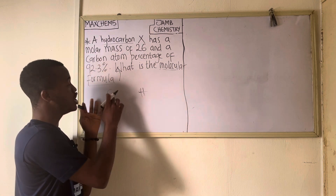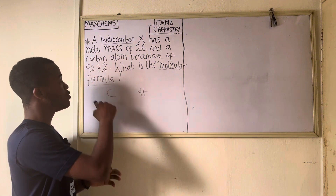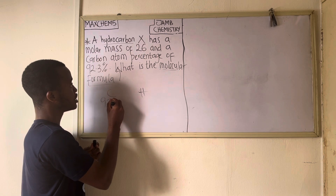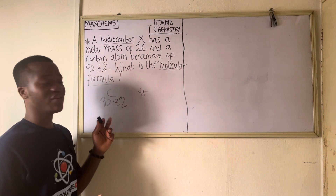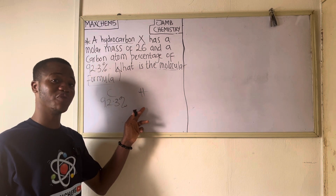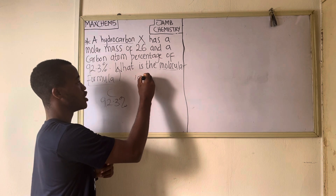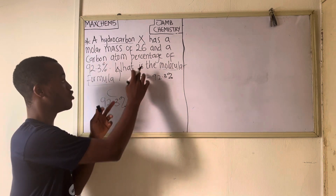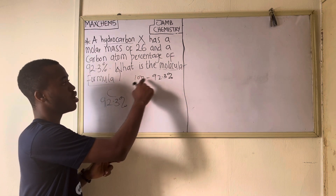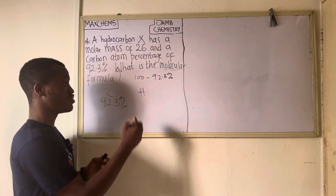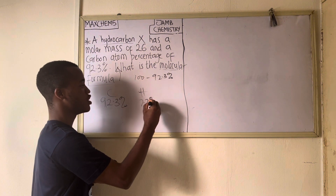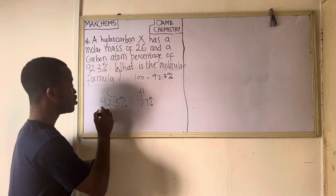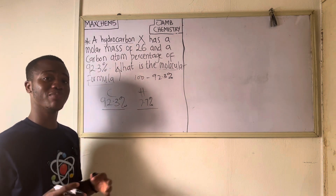To get the empirical formula, we need to write the percentage composition of each of the elements in the compound. We are given the percentage composition of carbon to be 92.3 percent. Now, if carbon is 92.3 percent, what is the percentage of hydrogen? That will be 100 minus 92.3 percent, because we know that a hydrocarbon only contains carbon and hydrogen. So 100 minus 92.3 gives us 7.7 percent — that is the percentage of hydrogen.